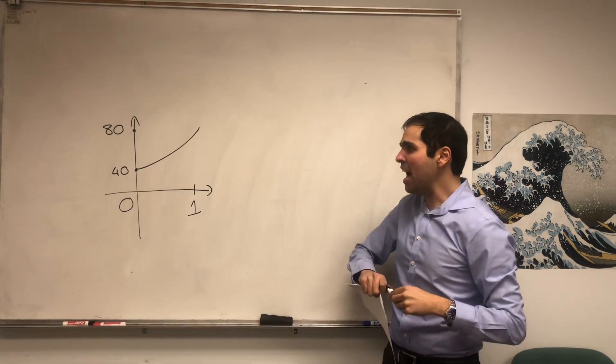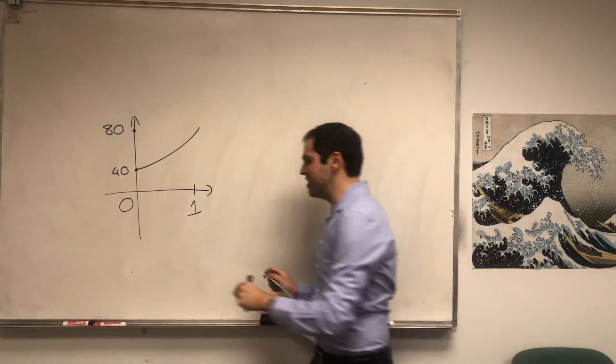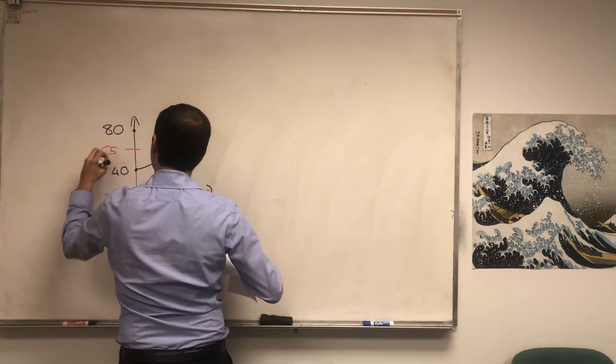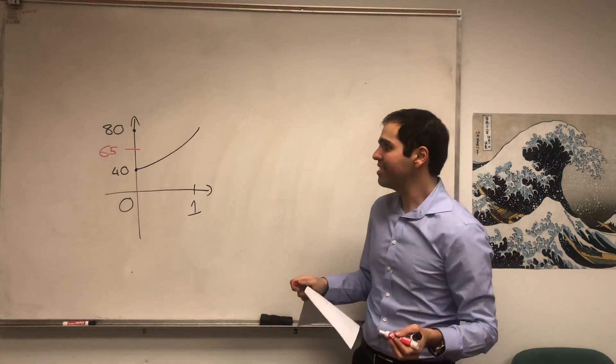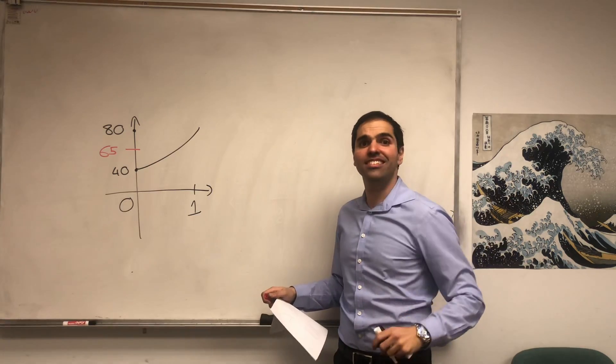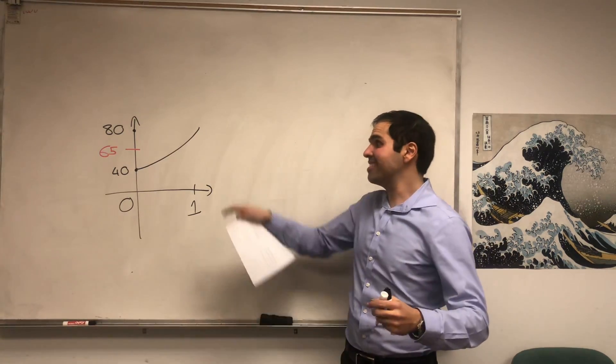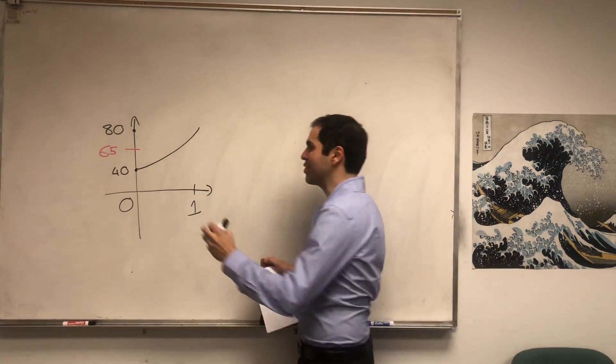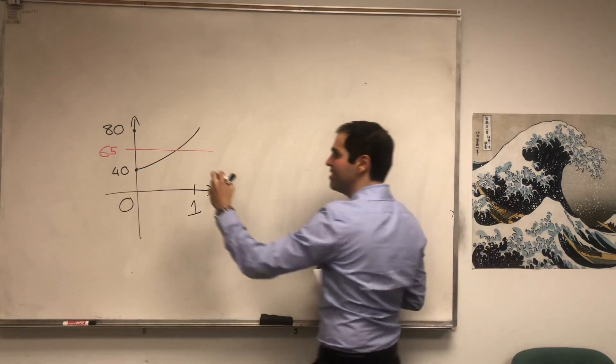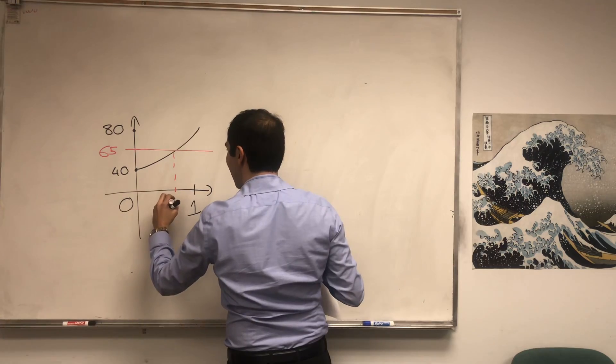And suppose on this highway the speed limit is 65. The question is, will there be a point where you cross the speed limit? Yes, if your trajectory is continuous. So that is the essence of the Intermediate Value Theorem.